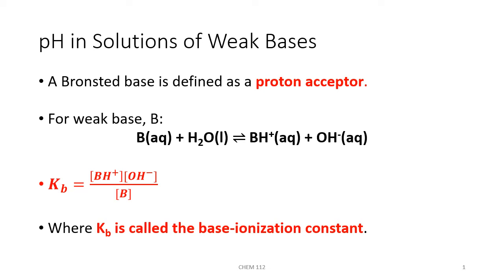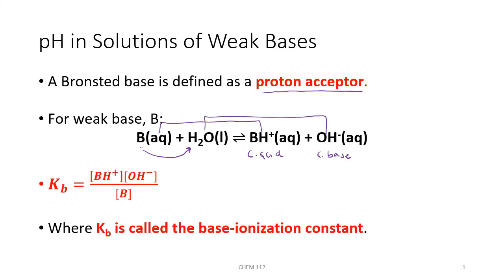Calculating the pH of a weak base solution is a lot like calculating the pH of a weak acid solution. A Brønsted base was defined as a species that could accept a proton. If you have a solution of a weak base in water, the base will accept a proton from the water, forming BH+ as the base's conjugate acid. When water loses a proton, the hydroxide ion will be the conjugate base of water. So these two would be an acid-base conjugate pair, and these two would be an acid-base conjugate pair.